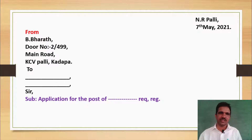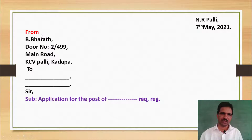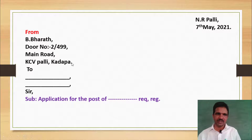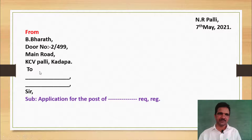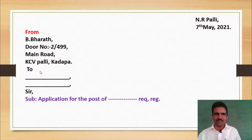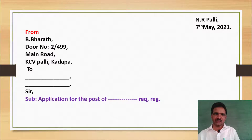Bharat is going to write this letter, so Bharat's from address is mentioned here. If you observe the from address, we don't put a comma or the word 'from', and we don't underline it. Every sentence in the address ends with a comma, and at the end of the address, a full stop is used. After the from address, we have to write the to address, which is already given in the letter.